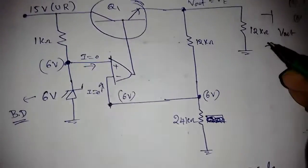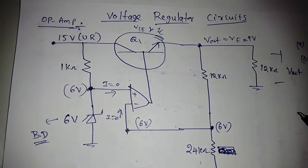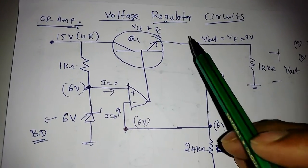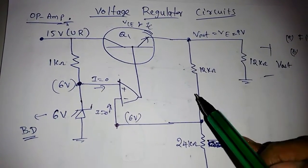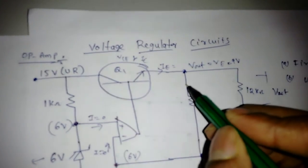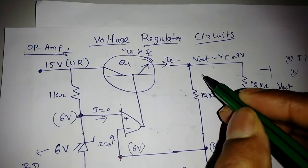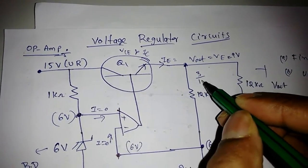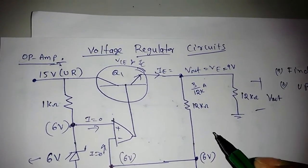Vout or VE we got is equal to 9 volts. Now once we know this voltage of 9 volts, I can find this current as well as this current, then we can find IE. This IE is equal to this current, which I can find like this: 9 minus 6, that is 3, divided by 12 kilo ampere, which is 1 by 4 milli ampere.